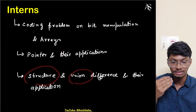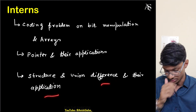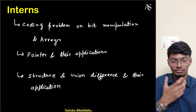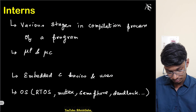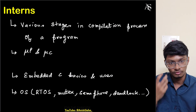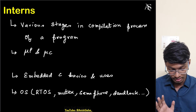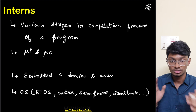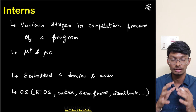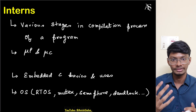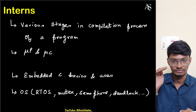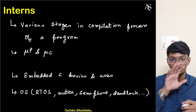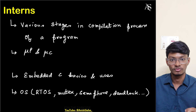You should know what structures and unions are, the differences between them, and their applications. Also, you need to know the various stages in the compilation process of a program. When you hit the compile button in C, many things happen in the background — you need a low-level understanding of how C code is converted into other formats.